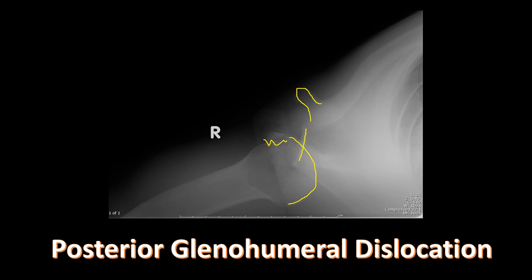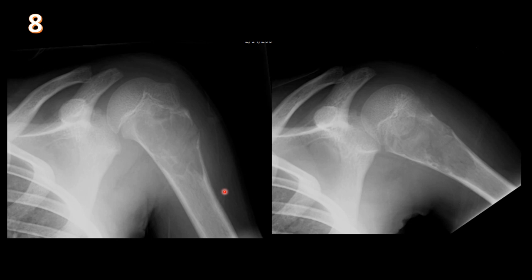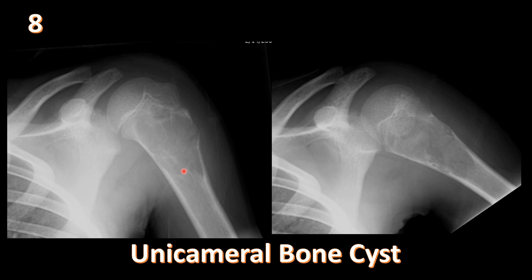AP views of the left shoulder in internal and external rotation in a skeletally immature patient show a bubbly lucent lesion within the proximal humerus with cortical disruption laterally — a pathological fracture through a unicameral bone cyst. Unicameral bone cysts are common in the proximal humerus in skeletally immature patients, are benign, and may show endosteal scalloping and bubbly septations. The fracture demonstrates the trap door sign — a cortical fragment hinges inside the cyst — also called the fallen fracture fragment sign when the fragment lies in the dependent portion.